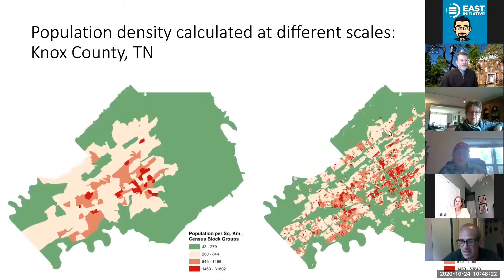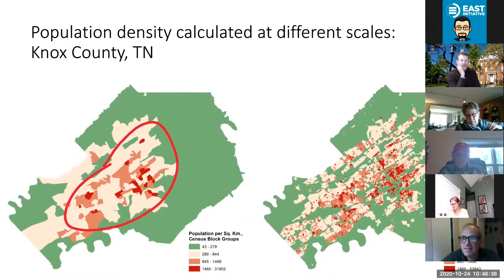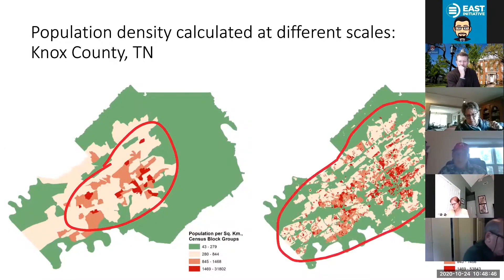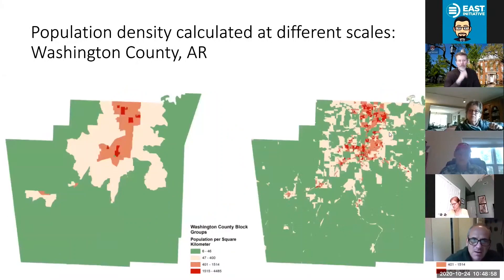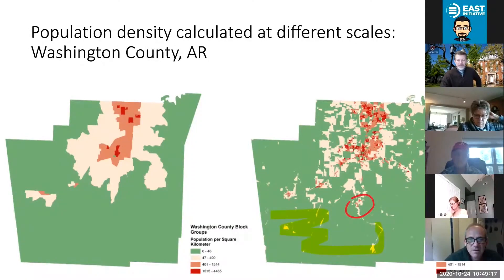Here, just as an example, we're looking at the population density of Knox County, Tennessee. On the left, density has been aggregated to census block groups — the larger units. On the right, we're looking at population based upon census blocks — the smaller units. If you look at the highest density areas in dark red in the block groups, they're grouped together towards the center of the county. But at the individual block level, you can see high density areas distributed all around the county, which are basically obscured at the larger scale. Here's Washington County in Arkansas — the same situation. We can see smaller high-density areas on the right that are not visible on the left, including down in Greenland.